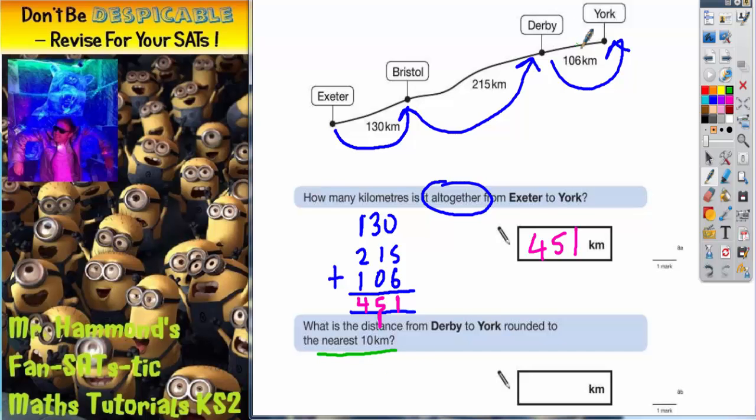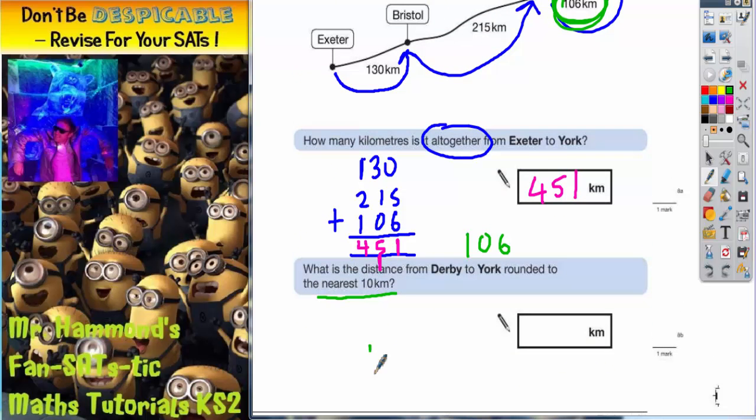Well Derby to York is this number here. Very important to get the right number. So we're looking at 106. So the question is what is 106 to the nearest 10?